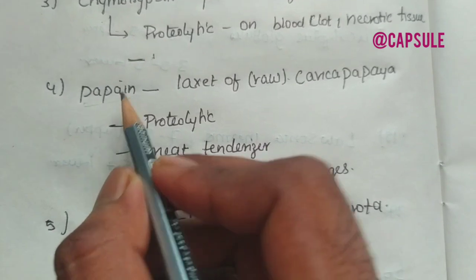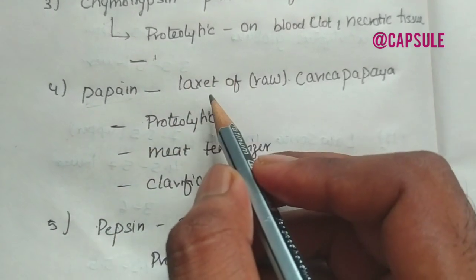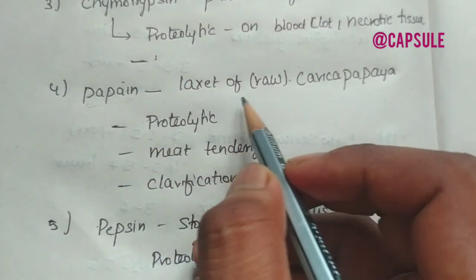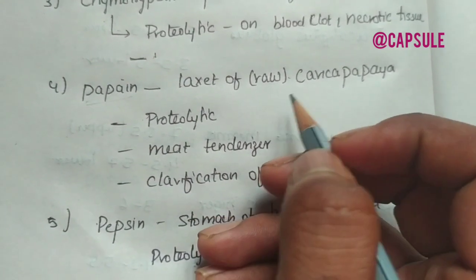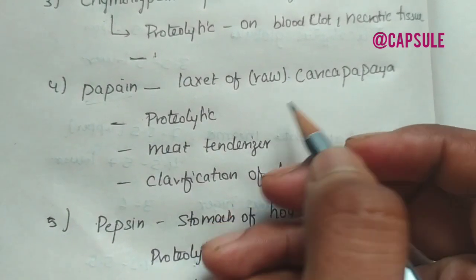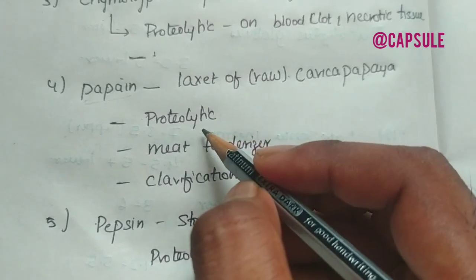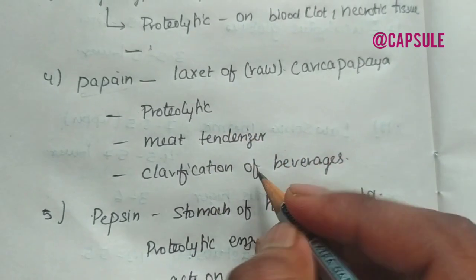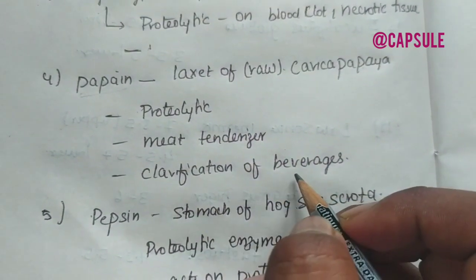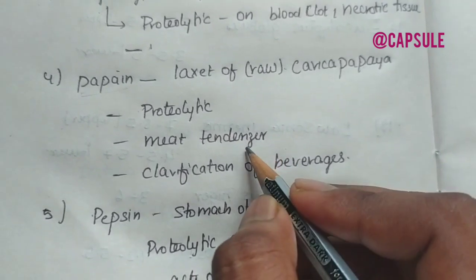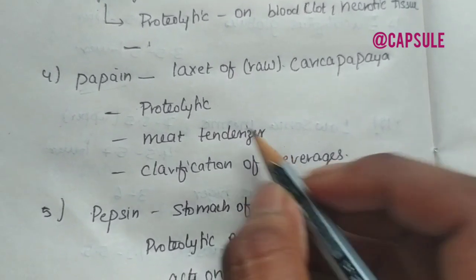Coming to the next one, papain. It is a latex of raw papaya, that is tropical Carica papaya. It is a proteolytic enzyme. It is used in the beverages industry for clarification and as a meat tenderizer.